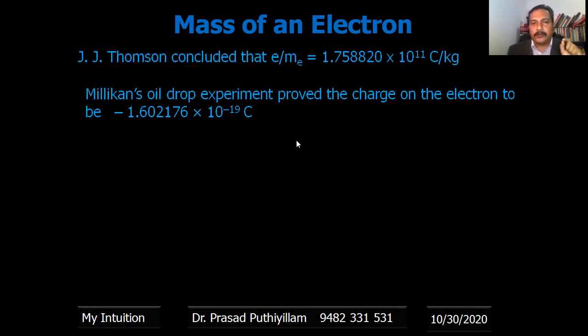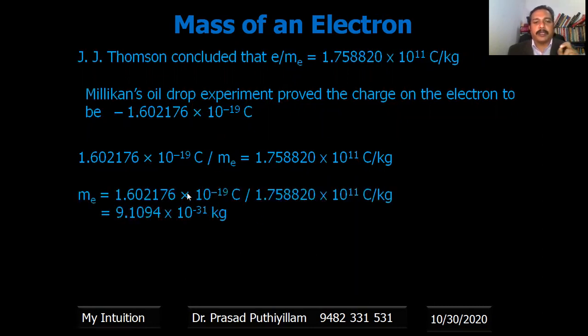The charge 1.602176 × 10^-19 coulombs upon mass of electron gives 1.758820 × 10^11 coulombs per kilogram. Therefore, me can be calculated by cross multiplication; you'll get 9.1094 × 10^-31 kilogram - that is the mass of an electron.